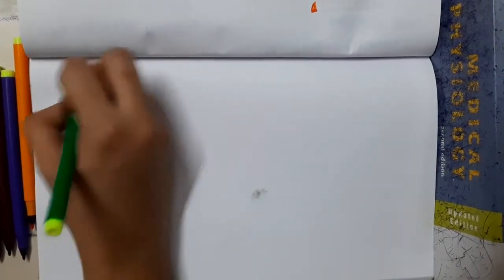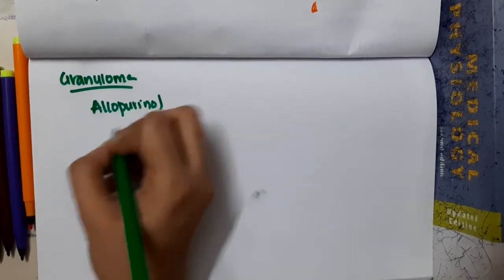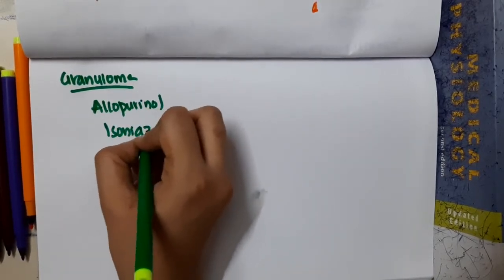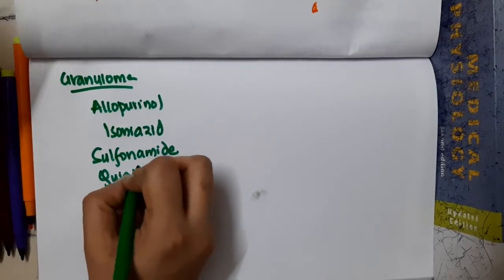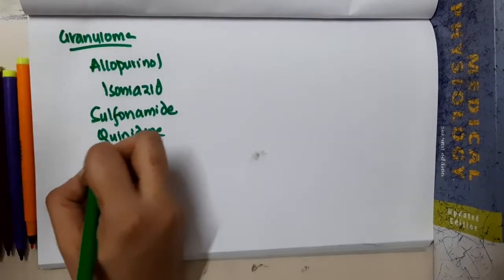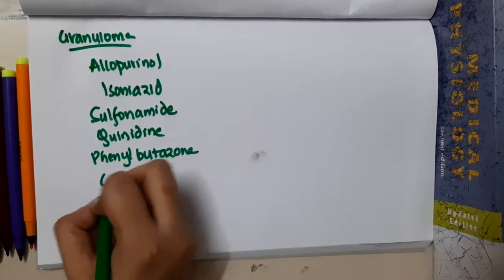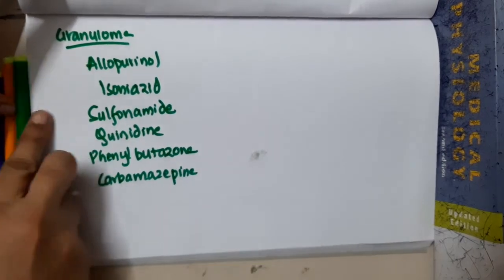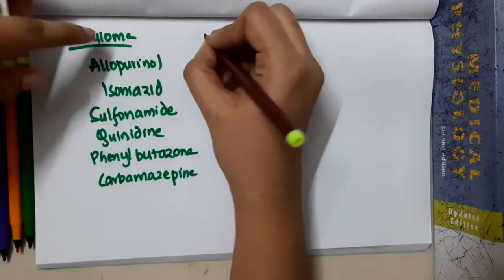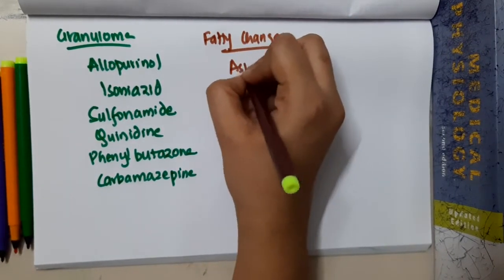Those drugs which cause granuloma in the liver are allopurinol, isoniazid, sulfonamide, quinidine, phenylbutazone, and carbamazepine.